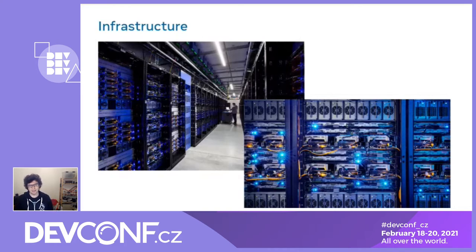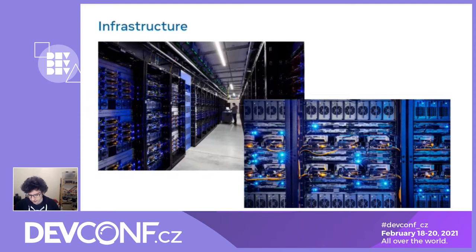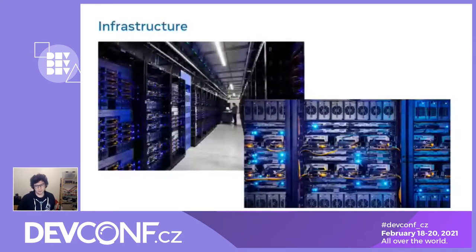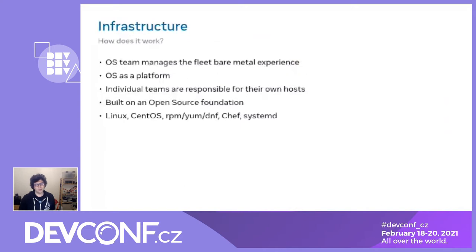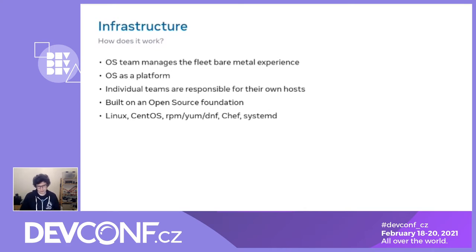Facebook has a lot of machines — we have millions of servers across the globe in multiple data centers. All of these machines are physical machines, all run CentOS, and that has been true for many years since the company was started. We try to manage this fleet in a scalable way and leverage open source software as much as we can. My team manages the bare metal experience of the fleet; we treat the operating system as a platform, building a common layer that other teams can leverage.